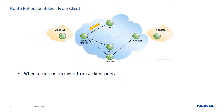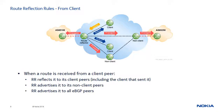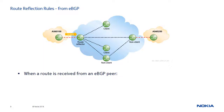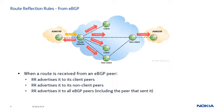If the selected best route is received from a client peer, the RR reflects the route to all its defined client peers including the originator, and propagates the route to all non-client peers and eBGP peers. A best and used route received from an eBGP peer is propagated to all iBGP peers and all eBGP peers, including the peer that sent it. Note that the sender eBGP peer will reject this looped route.